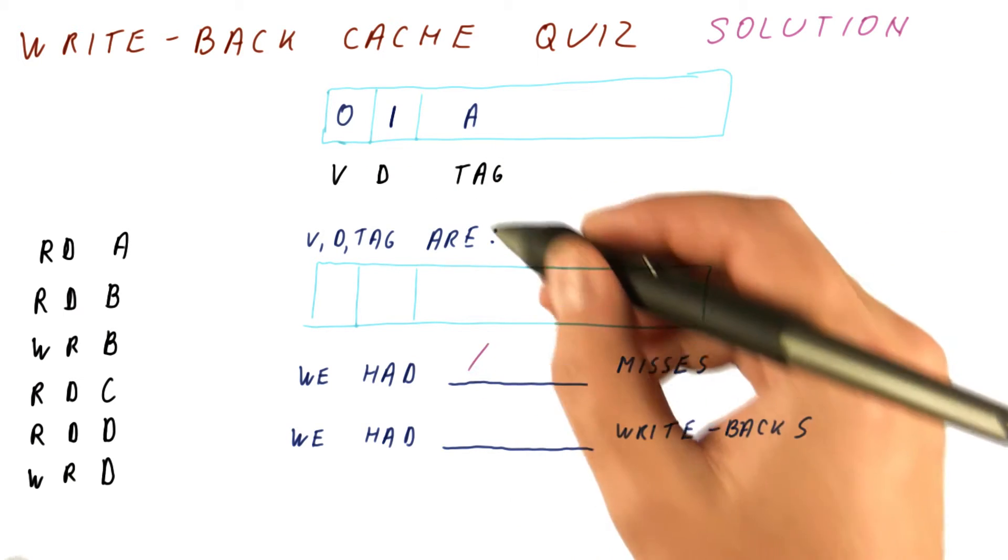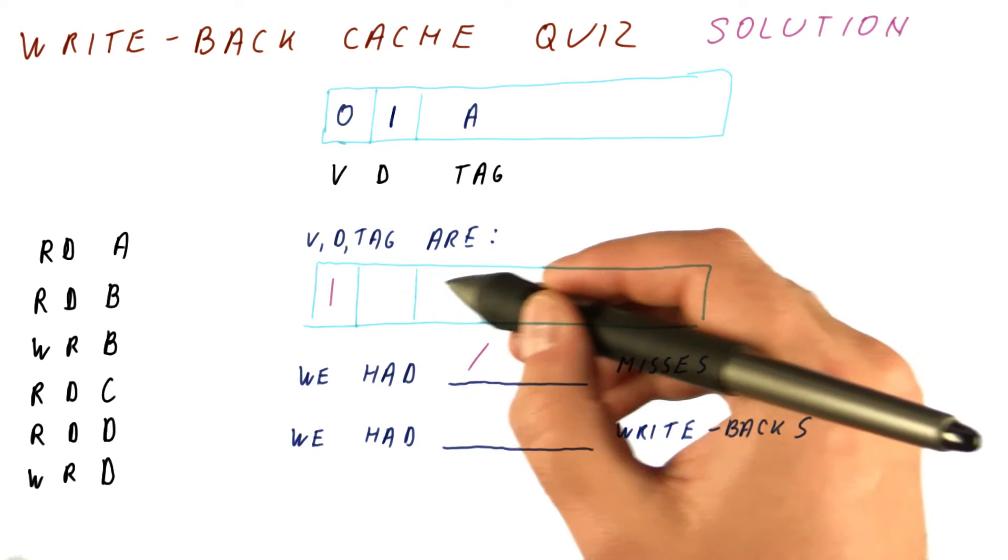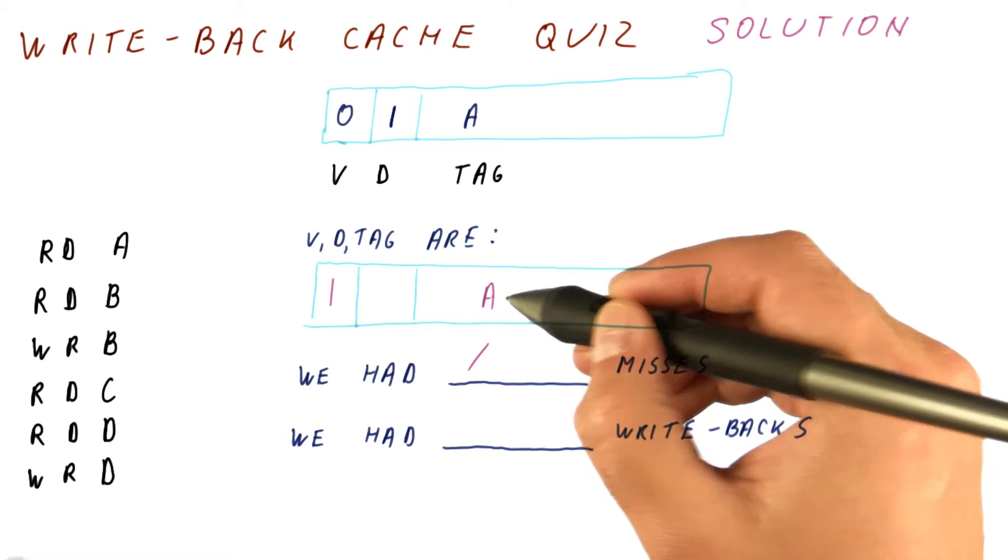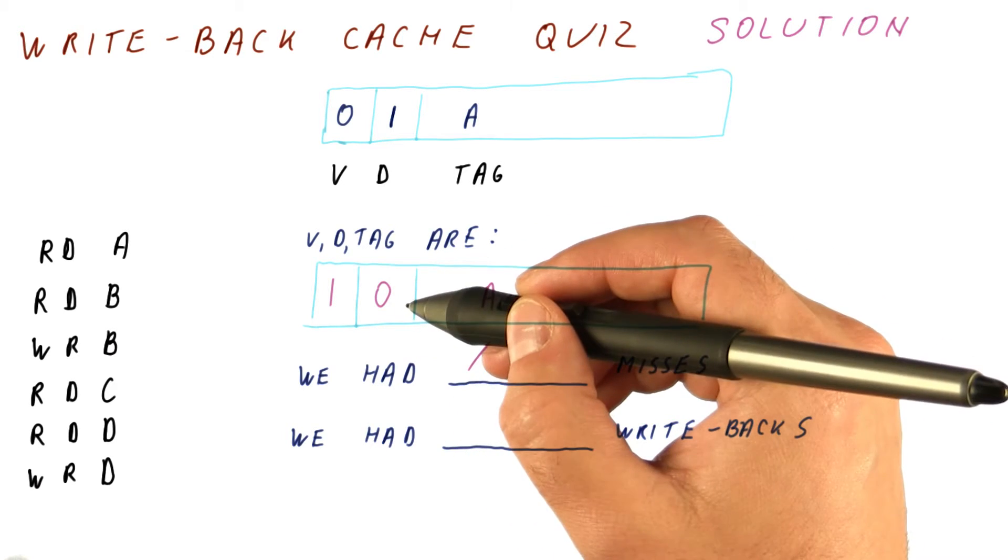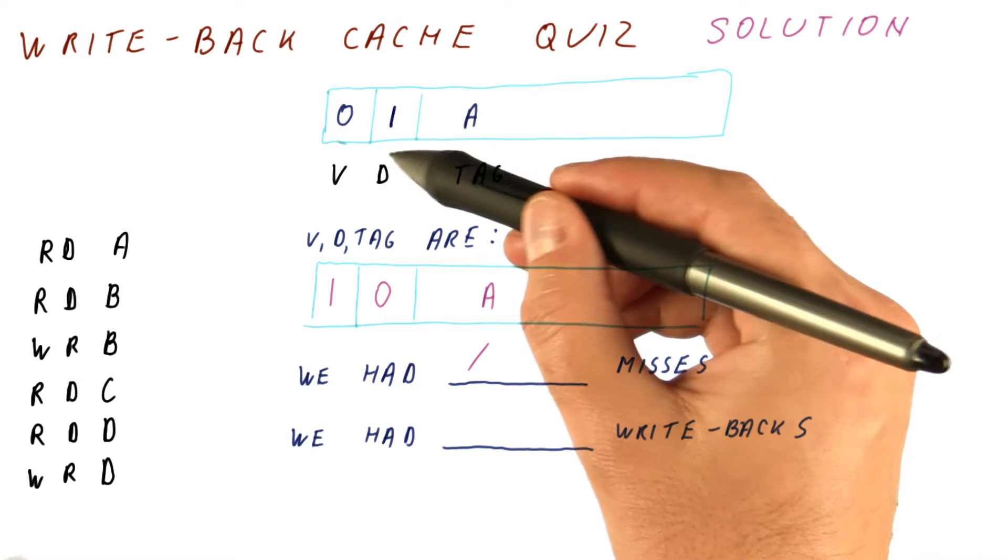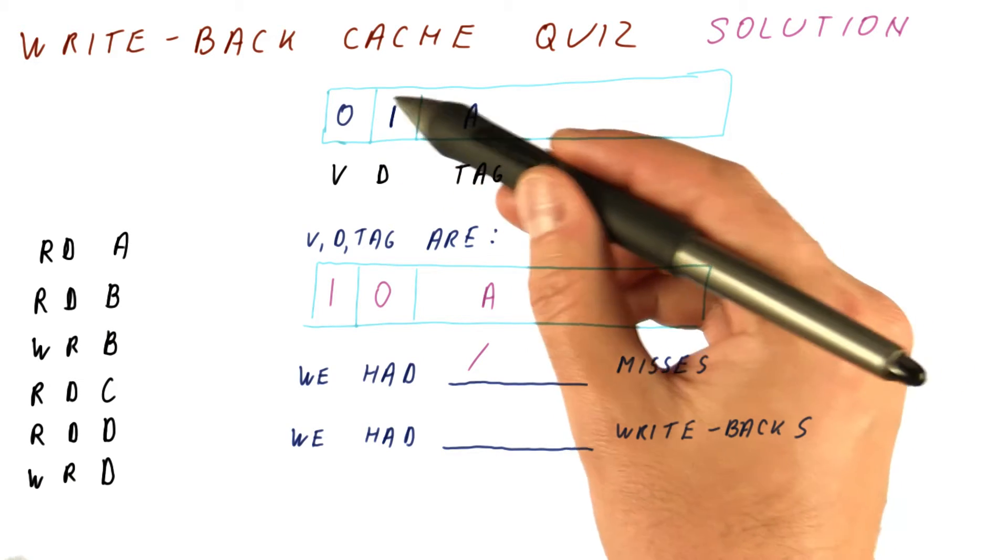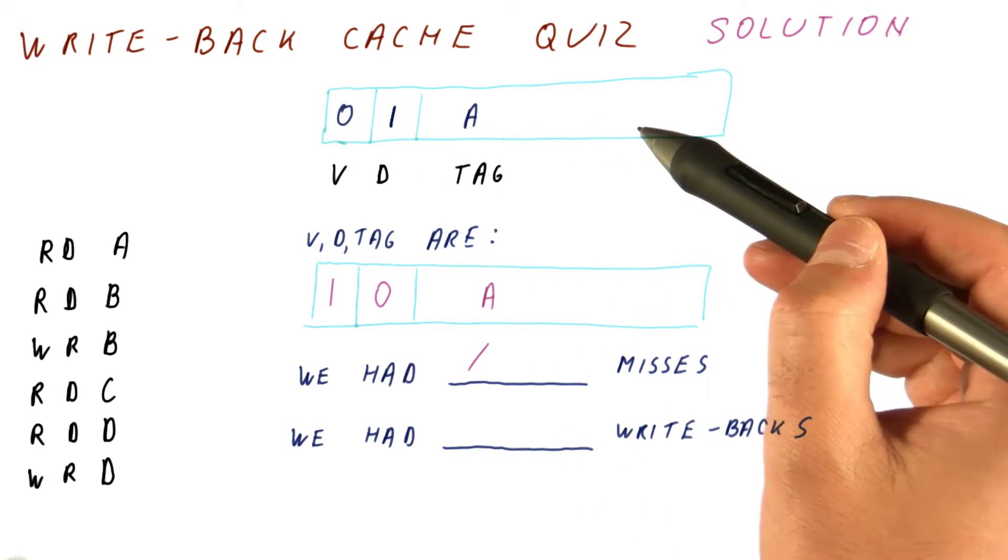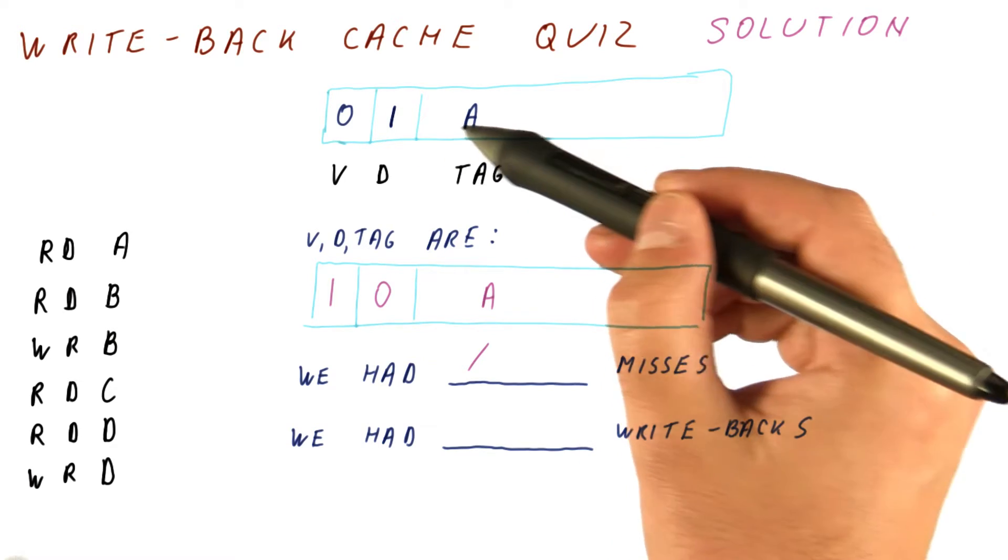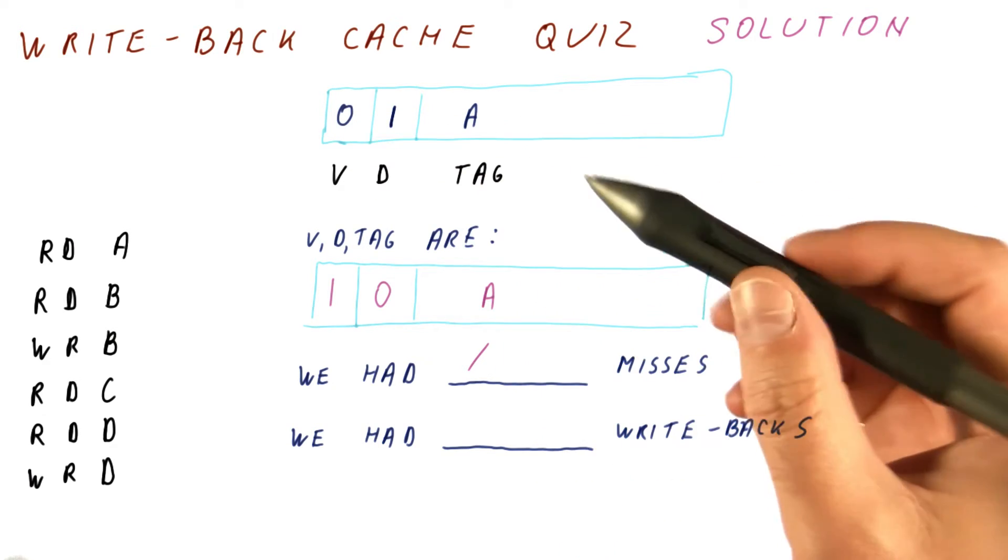Now we have one miss. We set the valid bit to one, the tag becomes A. This is a read, so the dirty bit is zero. Note that the fact that the dirty bit was one doesn't matter here because the line was not valid. It doesn't matter what's there if the valid bit is zero for that line.